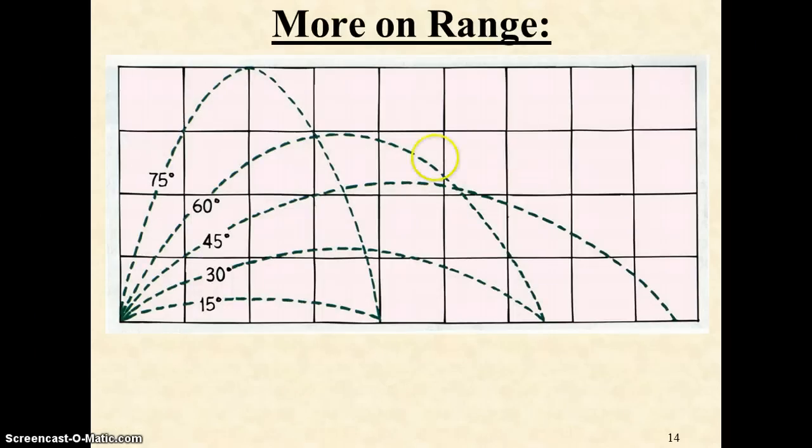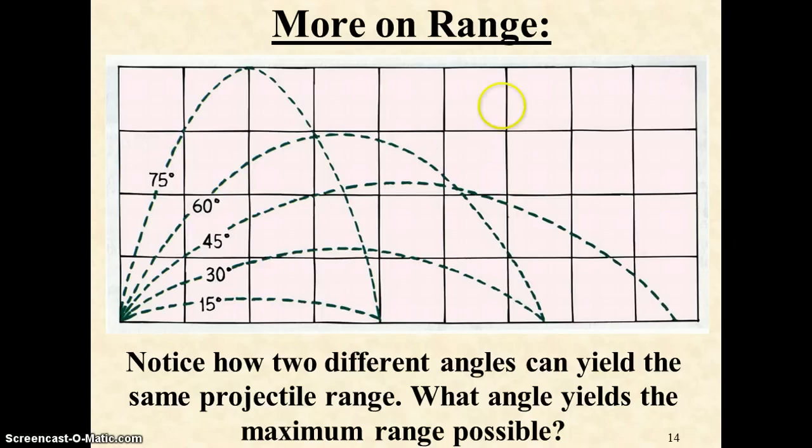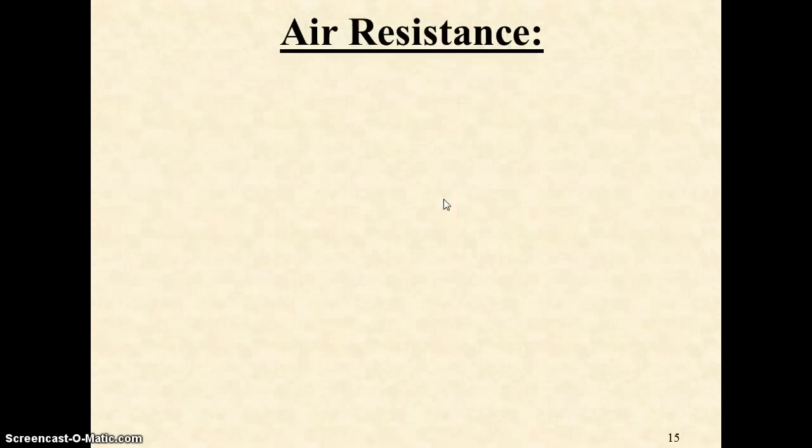We'll look at this in a later lab, but if you fire at the same speed, you can get various ranges depending upon the launch angle. Notice if you launch at 45 degrees, you get your maximum range. Any pair of complementary angles will yield exactly the same range. For instance, 30 and 60 degrees, as well as 15 and 75 degrees.